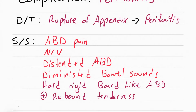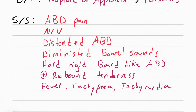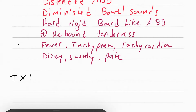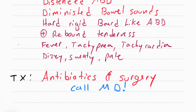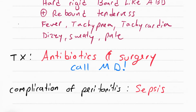Positive rebound tenderness — when you press down, it hurts on the way up. Symptoms of infection include fever, tachycardia, tachypnea, dizziness, sweating, and pallor. To treat this, you need to get antibiotics and get the patient to surgery by calling the doctor. If no one recognizes these symptoms of peritonitis, the patient can progress into sepsis, which is an infection of the blood, eventually leading to septic shock and all the organs failing.